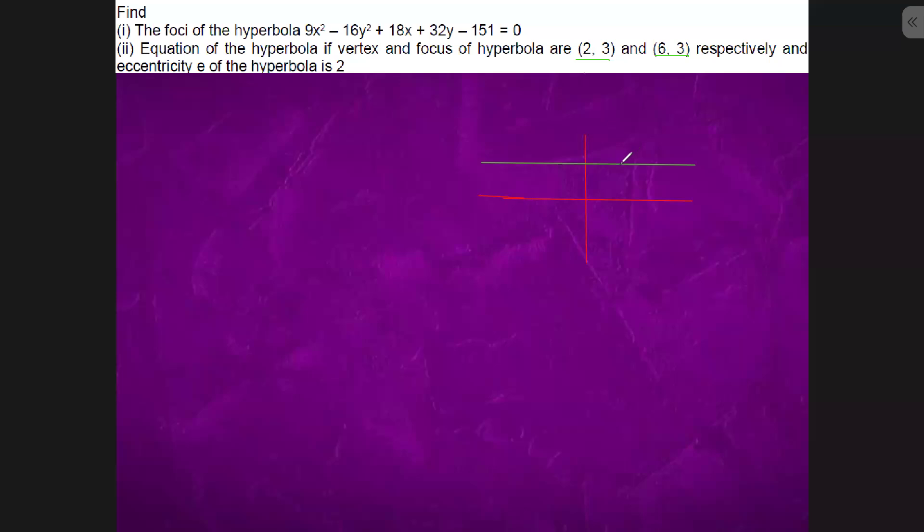So vertex is 2,3, focus is 6,3. This is the hyperbola. So I don't know where it will go but we are taking somewhere like this.